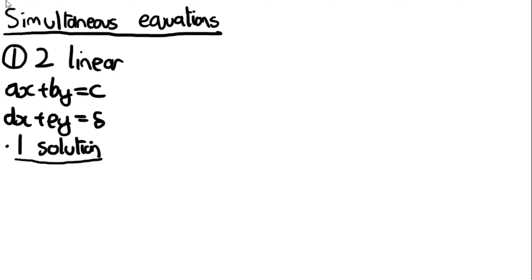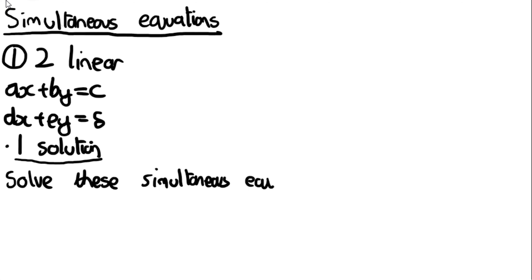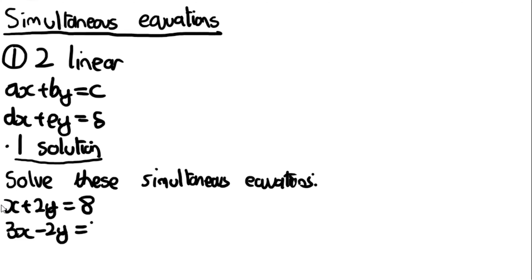There are three ways you can solve simultaneous equations where they're both linear. We'll use the same example throughout to illustrate. So the question is: solve these simultaneous equations — x + 2y = 8 and 3x − 2y = 4.